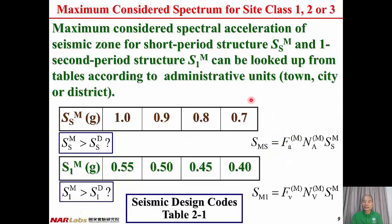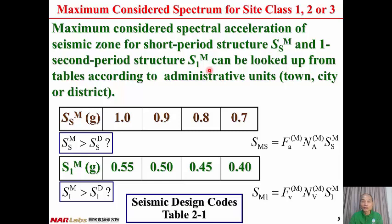Now we consider SSM first. SSM is the maximum considered spectral acceleration of seismic zone for short period structure. S1M is the maximum considered spectral acceleration of seismic zone for one second period structure. SSM and S1M can be looked up from tables according to the administrative units of the site — which town or city it is located in. There are four values for SSM: 1.0, 0.9, 0.8, and 0.7.